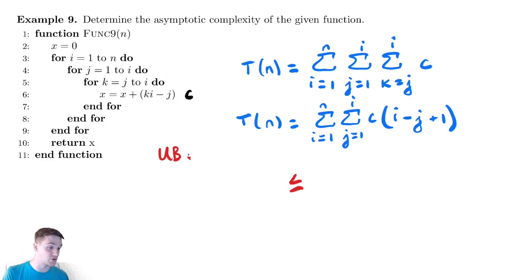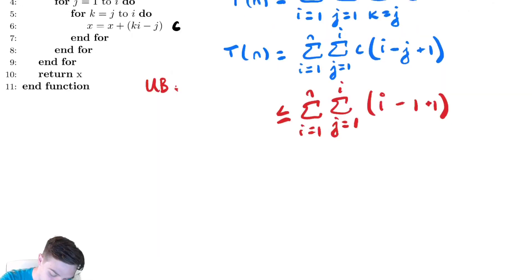As I plug in bigger values of j, I am subtracting larger and larger values. So the value of j that would make it the biggest would be the smallest value that j takes. So I can make it bigger by keeping everything the same by replacing j with the smallest value it takes, which is 1. And that looks really convenient. Now I have a minus 1 and a plus 1, and those will cancel in a nice way.